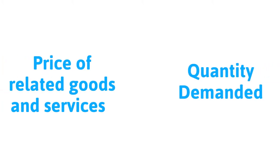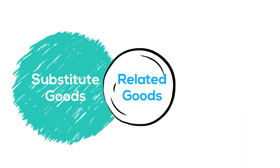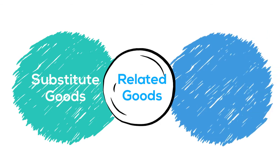In this video, we will discuss the relationship between the price of related goods and services and the quantity demanded of a good or service, when the price of the good or service is kept constant. Related goods can be of two types: substitute goods and complementary goods.